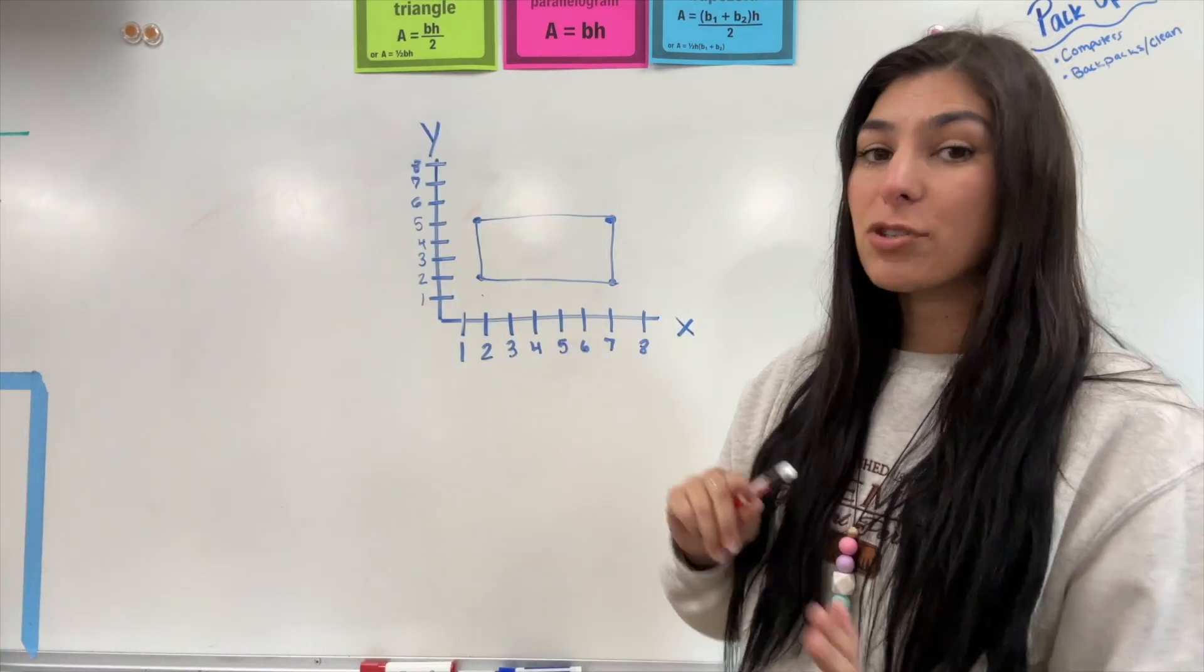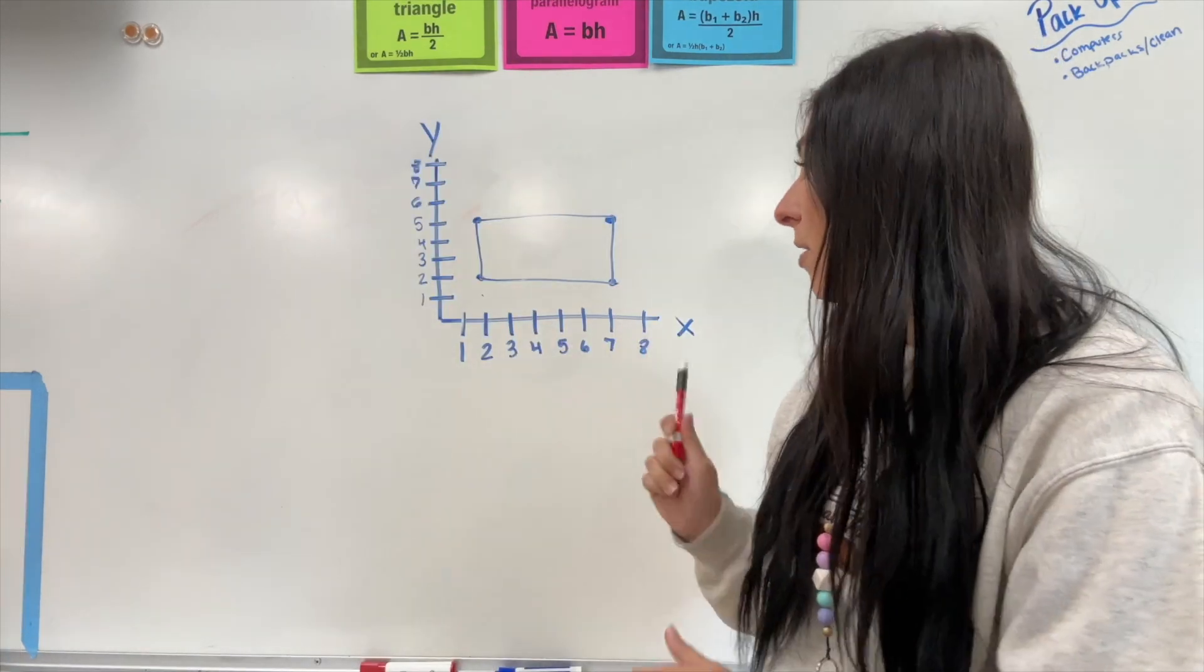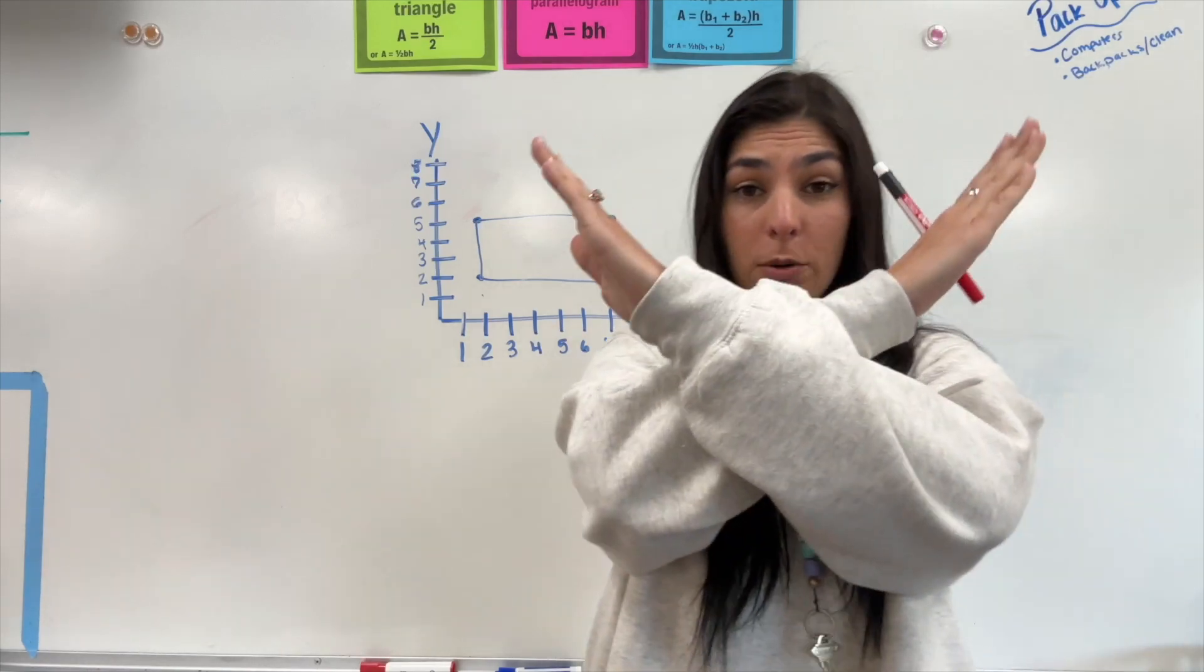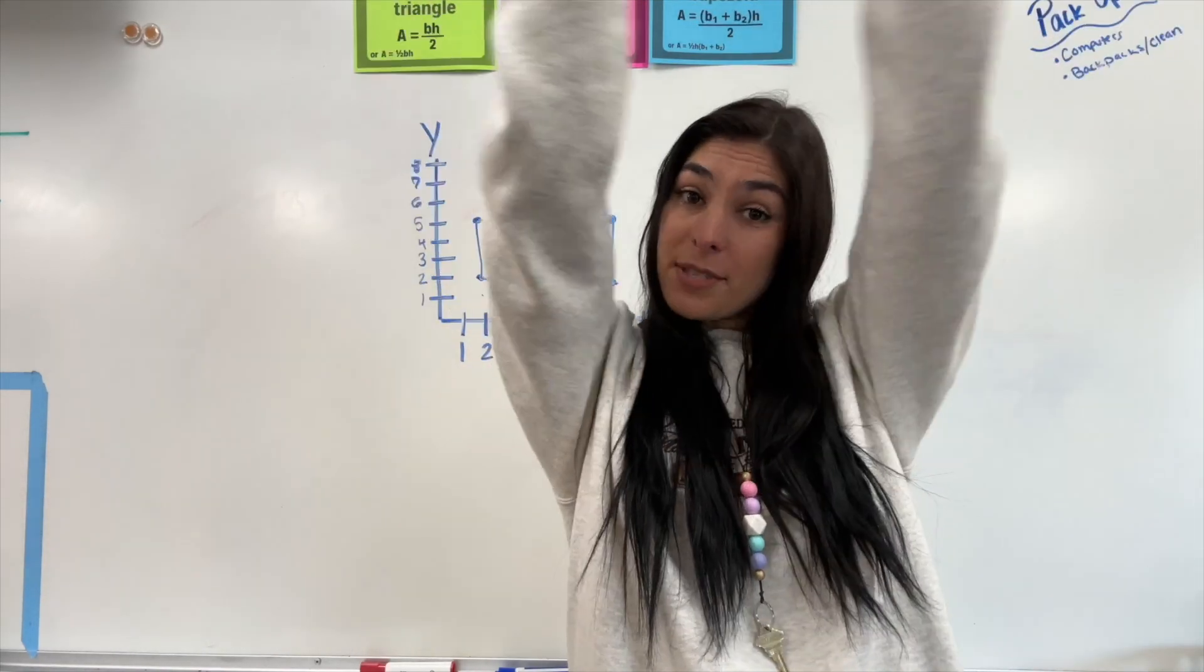Okay, so here's our first polygon and it's actually graphed up for us. Now, first things first, the X always goes across and the Y always goes up and down.